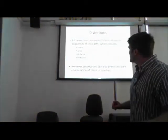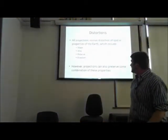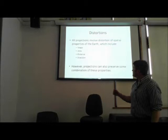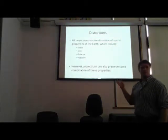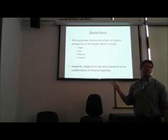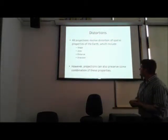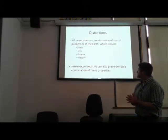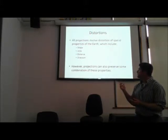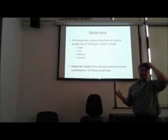This distortion can manifest itself in one of four dimensions — four spatial properties of Earth's surface features — and those are shape, area, distance, and direction.